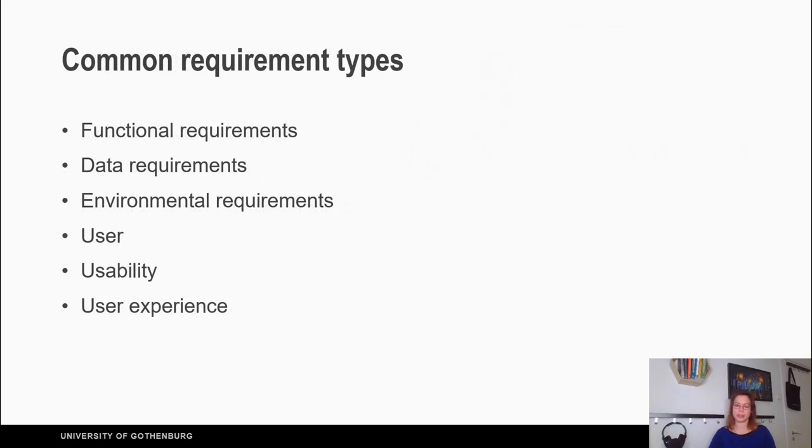Common Requirement Types. We have six common requirement types: Functional Requirements, Data Requirements, Environmental Requirements, User, Usability, and User Experience. Functional Requirements describe what the product will do. Data Requirements capture the information related to the data, for example, size, type, and accuracy.